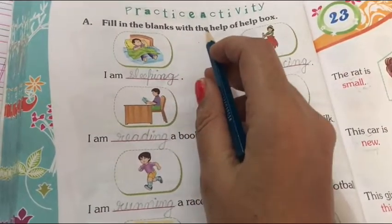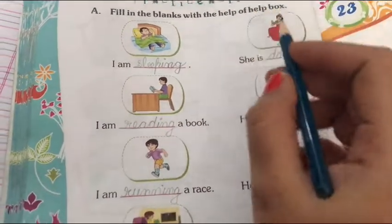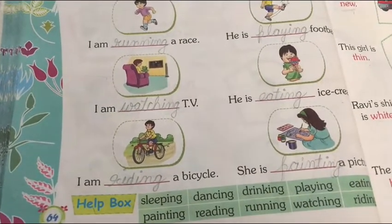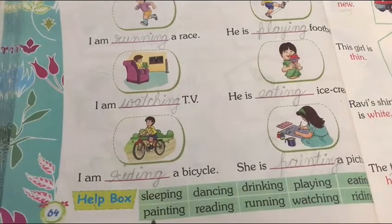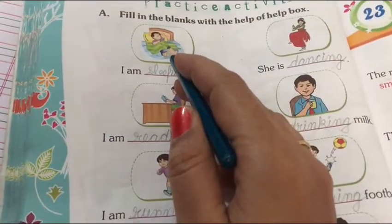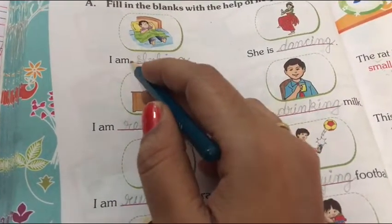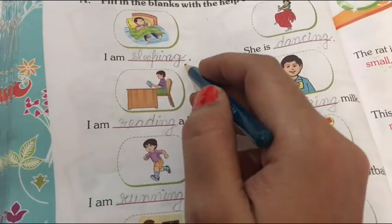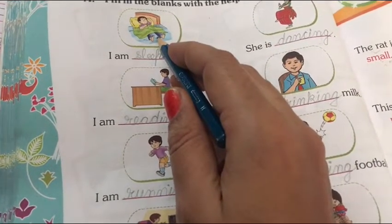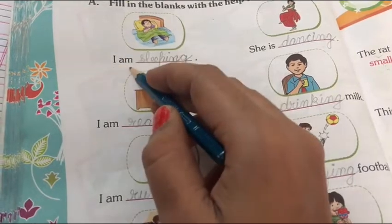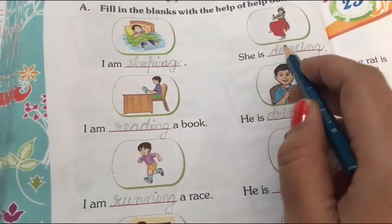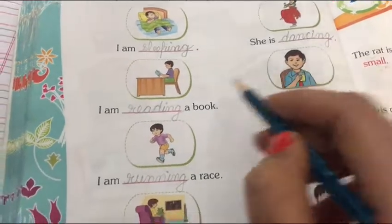Fill in the blanks with the help of the help box. Here a help box is given. In the exam, a help box may or may not be given — you have to identify from the picture and write in the blank. See, this boy is sleeping. So raha hai. I am sleeping. She is dancing. Dancing is her action word.